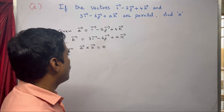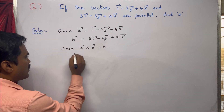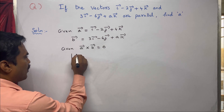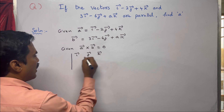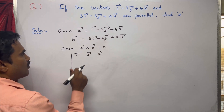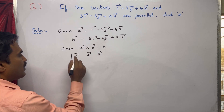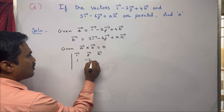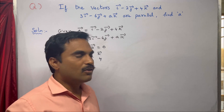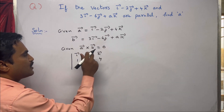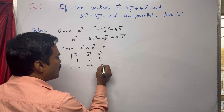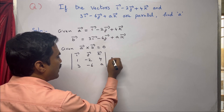To find a̅ cross b̅, form a determinant. The first row is i̅, j̅, k̅. The second row contains the coefficients of a̅: the coefficient of i̅ is 1, coefficient of j̅ is minus 2, coefficient of k̅ is 4. The third row contains the coefficients of b̅: i̅ coefficient is 3, j̅ coefficient is minus 6, k̅ coefficient is a. The right-hand side is 0.